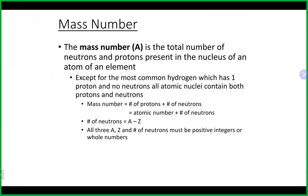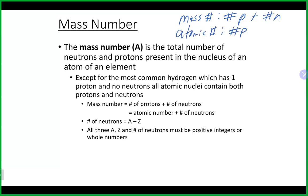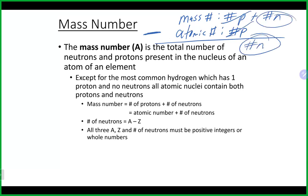The mass number, abbreviated A, is the number of protons plus the number of neutrons in the nucleus. The atomic number Z is the number of protons. So the number of neutrons equals the mass number minus the atomic number — mass number minus atomic number gives you neutrons.